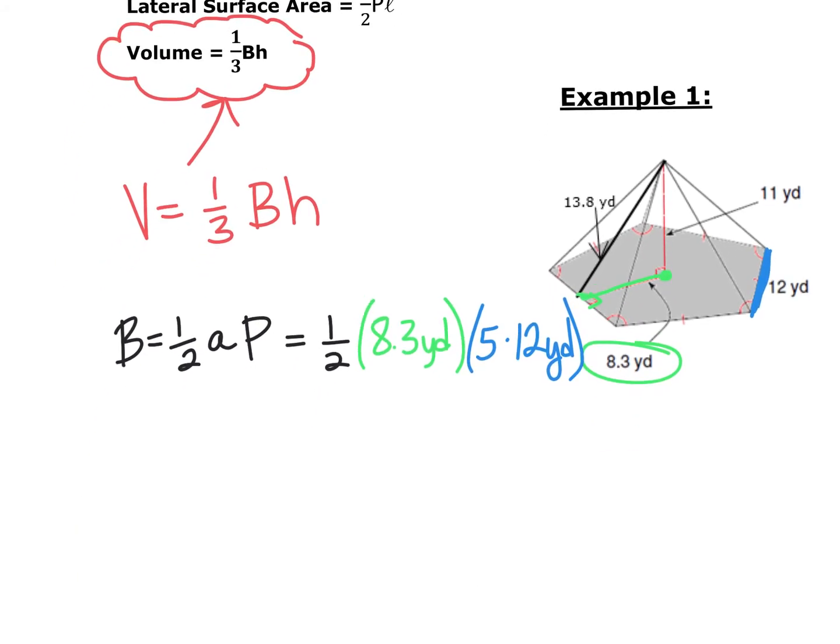So we'll put that in the calculator and we get that the big B is equal to 249 yards squared because we have 8.3 yards times 12 yards.